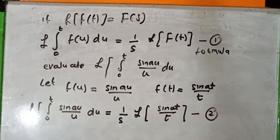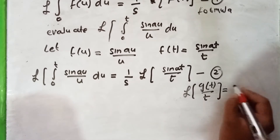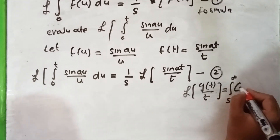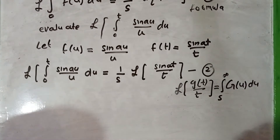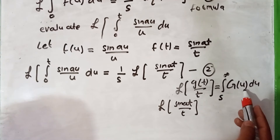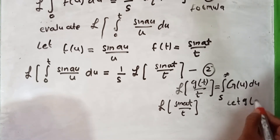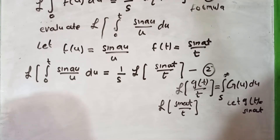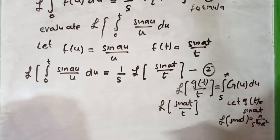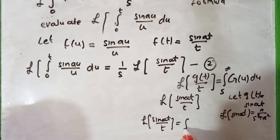This is equation number 2. We know that Laplace of g of t over t is equal to the integral from s to infinity of G of u du. To find the Laplace of sin(at) over t, let g of t equal sin(at), so Laplace of sin(at) equals a over s squared plus a squared.